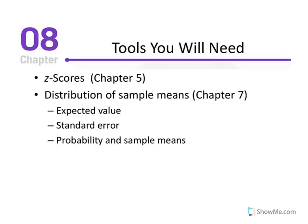Tools you will need for this chapter include Z-scores. In Chapter 5, we learned how to convert an X-value into a Z-score: Z equals X minus mu divided by standard deviation. The Z-score indicates the exact location of a score in relation to the mean expressed in standard deviation units. A positive Z-score is above the population mean; a negative Z-score is below it. The sign tells us direction, and the numeric value tells us how many standard deviation units from the center.